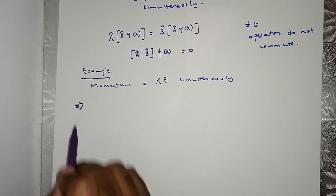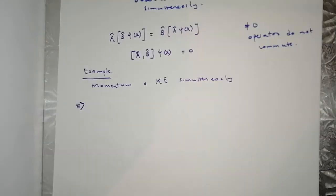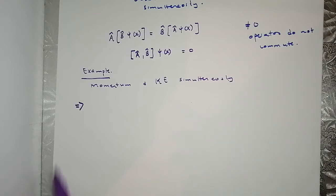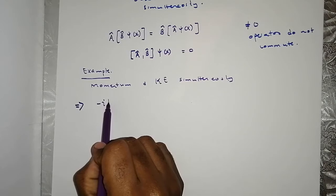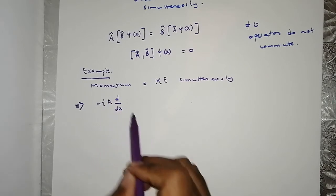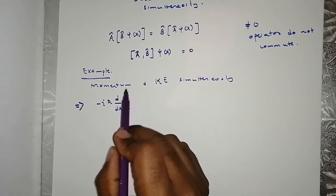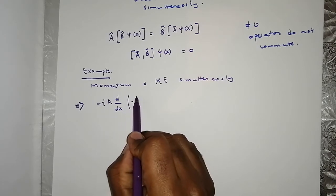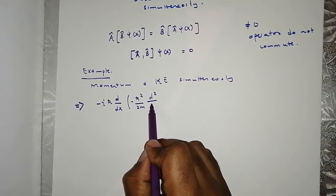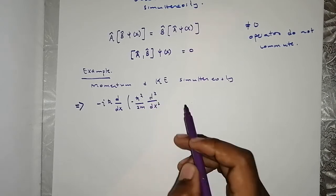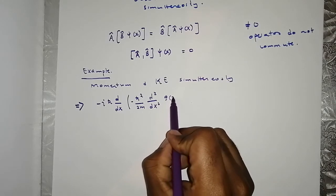What are we going to do? This square bracket is called the commutator. We are going to determine whether the two operators commute. This is being applied initially to M D squared divided by DX squared. This can be applied to an arbitrary function — let's say G of X.